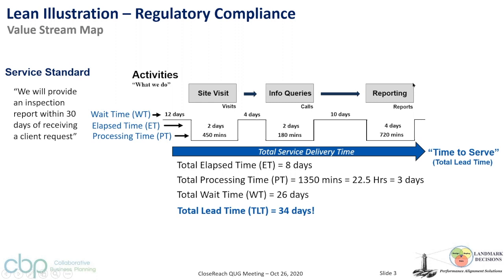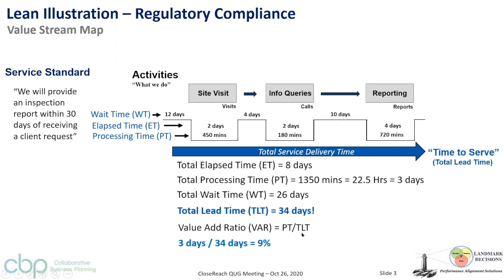Understanding from a lean perspective what's happening — and then optimizing it — is absolutely key. A key lean parameter is the value added ratio: processing time divided by total lead time of 34 days. In this case it's about nine percent, which is actually not bad. Ten to twenty percent is considered better performance, and very rarely will you see organizations above 30 to 40 percent.